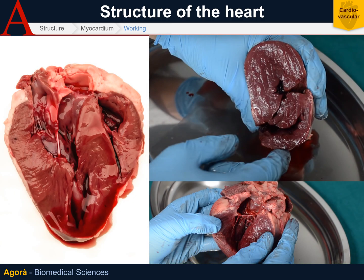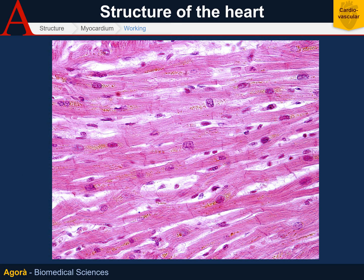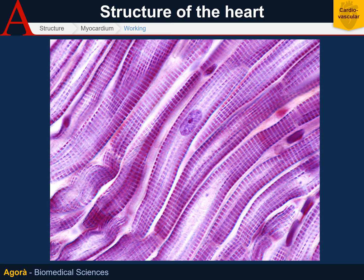Now let's look at the appearance of the myocardium — it is a reddish tissue and in some parts very thick. Under the microscope the cells appear eosinophilic, slightly striated, especially around the central nucleus, with a massive presence of capillaries between cells. By magnifying the image, the striations become easier to observe, and further magnification clearly shows the position of the nuclei.